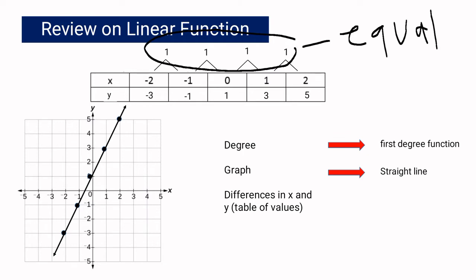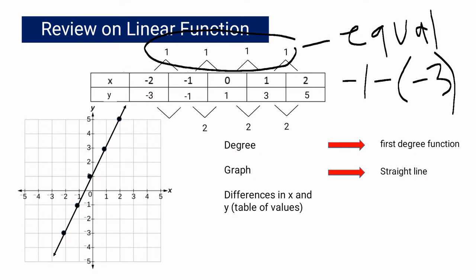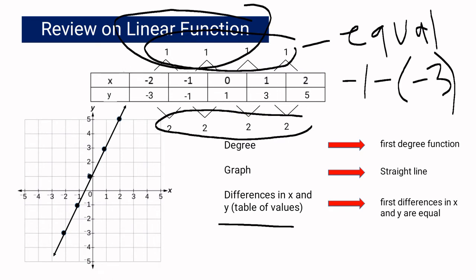Now for the differences in y: 5 minus 3 is 2; 3 minus 1 is 2; 1 minus negative 1 is 2; and negative 1 minus negative 3 is also 2. The differences in y are also equal. So in a linear function, the first differences in both x and y are equal.